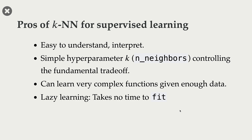If you compare this to decision trees, in decision trees most of the work is done in fit. During fit, it finds out the features that are most informative and also finds out the thresholds for these features. In case of KNNs, there is no work to do during fit — it doesn't do anything during fit; what it does is store all the examples. And that's why it's also called lazy learning, because it takes no time to fit.